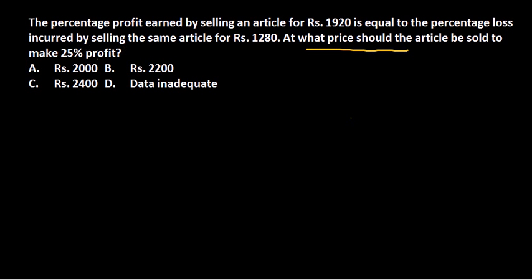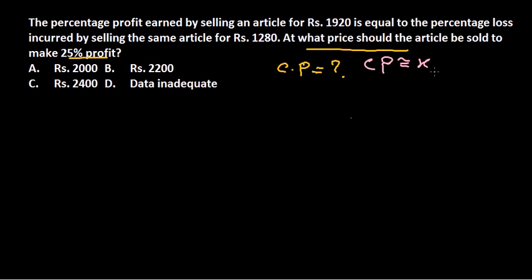To find the price that gives 25% profit, we need to know the cost price. To get the percentage profit, we definitely need the value of the cost price — otherwise we can't solve it. We don't know the cost price here, so we need to assume it. Let's assume the cost price as X, so CP = X.